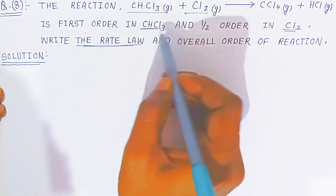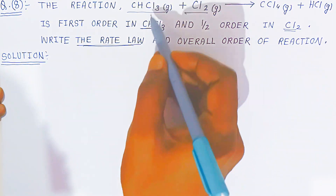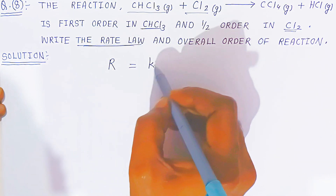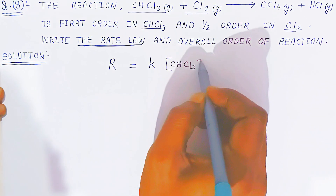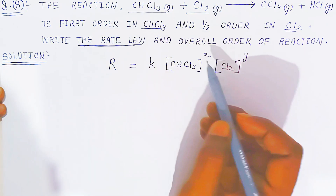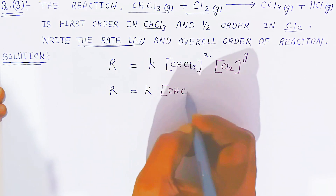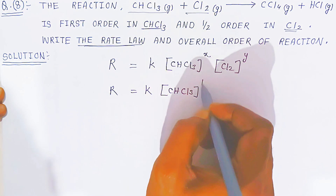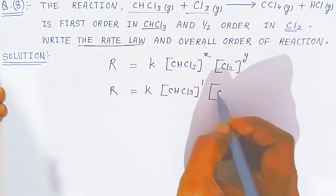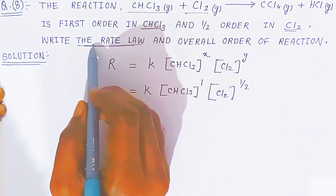So you have to write the rate law. If you know the order, you can write the rate law. When you apply the rate law to this reactant side, rate R equals the product of the rate constant K and the concentration of chloroform CHCl₃ raised to X, and concentration of chlorine raised to Y. Here the order values are given: X is 1 (first order in chloroform) and Y is 1/2 (half order in chlorine). This is already given in the question.